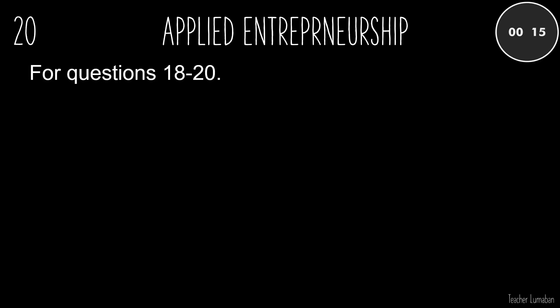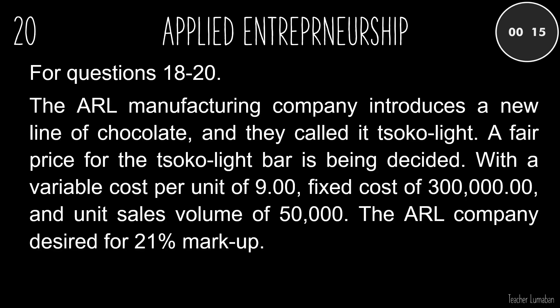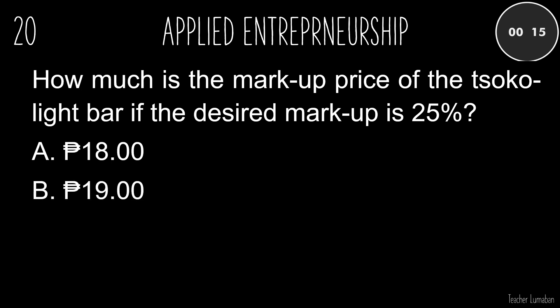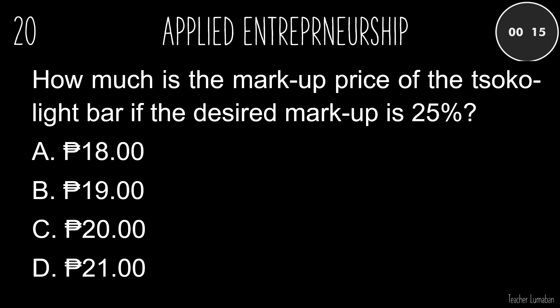The ARL manufacturing company's Tsikolite bar has a variable cost per unit of 9.00 pesos, fixed cost of 300,000.00 pesos, unit sales volume of 50,000, and a desired 21% markup. How much is the markup price of the Tsikolite bar if the desired markup is 25%? A. 18.00 pesos. B. 19.00 pesos. C. 20.00 pesos. D. 21.00 pesos.